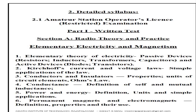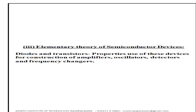Further topics include Properties and Units of Circuit Elements, Ohm's Law, Conductance, Definition of Self and Mutual Inductances, Power and Energy - definitions, units, and simple applications. Also covered: Permanent Magnets and Electromagnets - definitions, properties and their use. Elementary Theory of Semiconductor Devices: Diodes and Transistors - properties and use of these devices for construction of amplifiers.